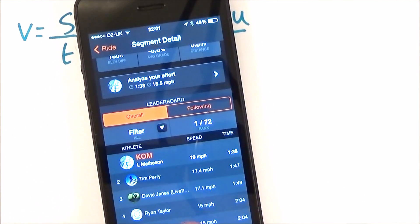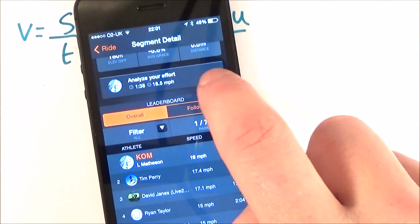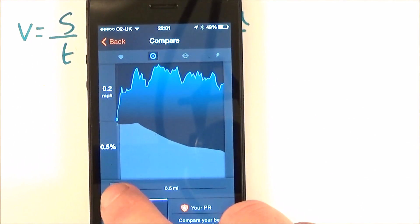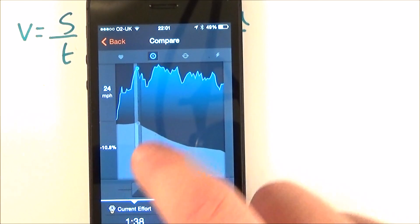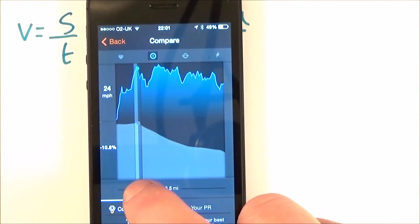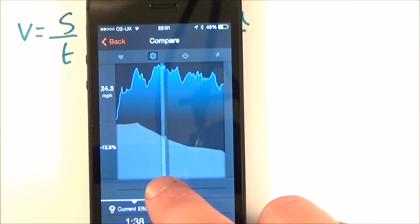But one of the great things about this data is that on any kind of phone you can get loads of information about how you've got on. So if I wanted to maybe analyze my effort, what I have here is a map of how I got on, maybe the elevation across on this graph here.